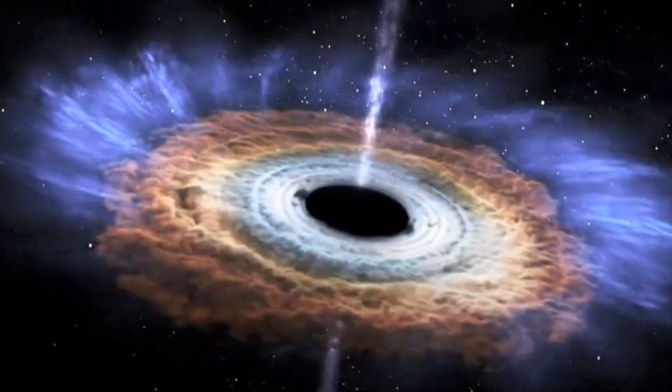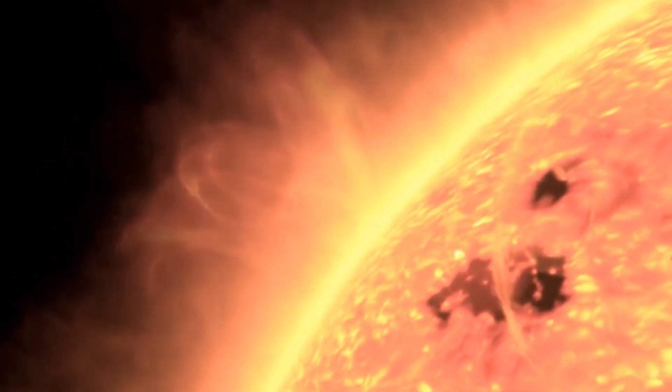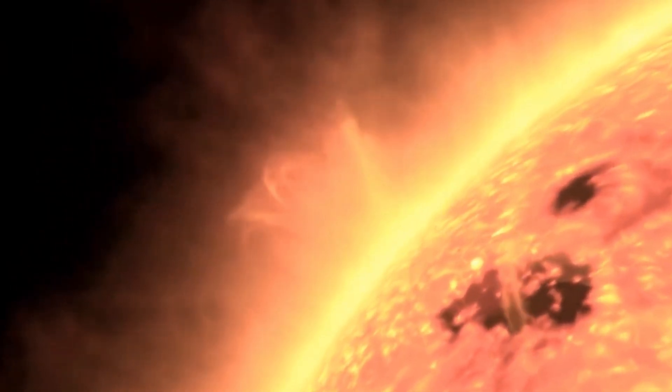But we'll use a shortcut, a wormhole, to reach near the black hole within seconds. Most black holes are born from the death of massive stars. When such a star explodes, it emits a light ten billion times brighter than the sun, a supernova.